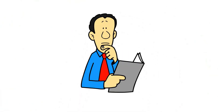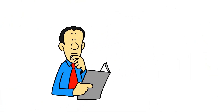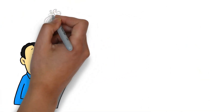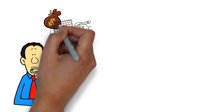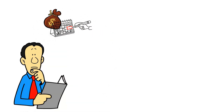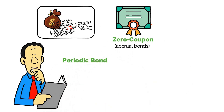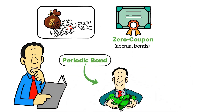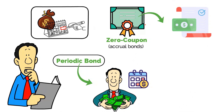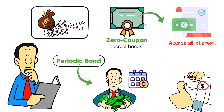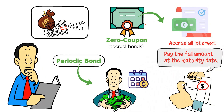Let's quickly cover an uncommon payment structure before moving on to the different types of bonds. Government bonds are typically sold as periodic payment securities, as we've discussed in the intro to the fixed income video, but can also be sold as zero-coupon bonds, also known as accrual bonds. Periodic bonds will have payments to the owner typically on monthly to annual timeframes, while the zero-coupon bond will accrue all interest owed and pay the full amount at the maturity date.